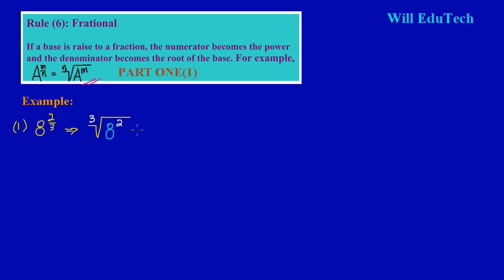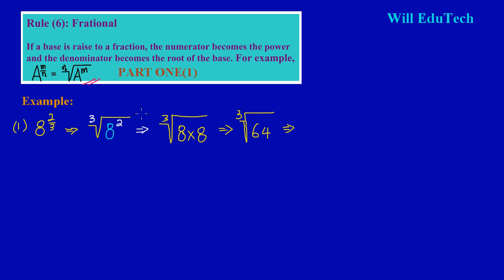If we expand this, we have the cube root of 8 squared. Eight squared means 8 multiplied by itself two times, so that's 8 times 8, which equals 64. We're taking the cube root of 64, and the cube root of 64 is 4. So our answer is 4.